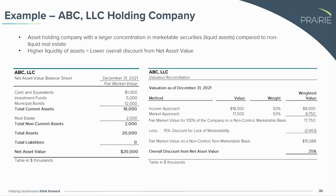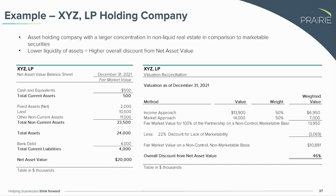Comparing the two: the more liquid assets produced a lower overall discount of 25%, versus the higher 46% discount for the illiquid, real estate-heavy entity. These are things to think about as you're going through your planning — the type of assets contributed to the asset holding companies does make a difference in the ability to support higher discounts.